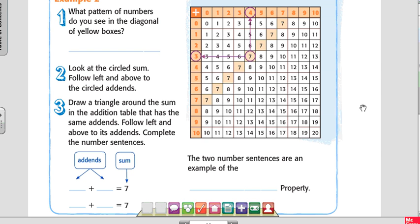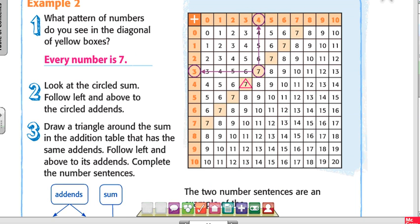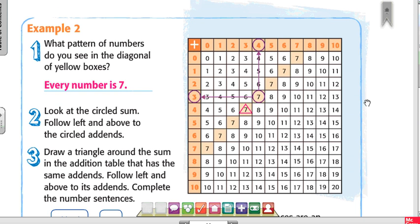Now look at example number two. It says, what pattern of numbers do you see in the diagonal of yellow boxes? They're all sevens. Every number is seven. That's the pattern right there.